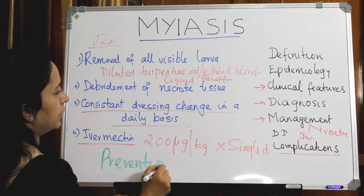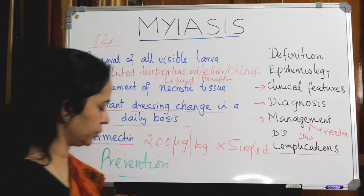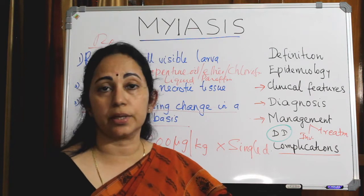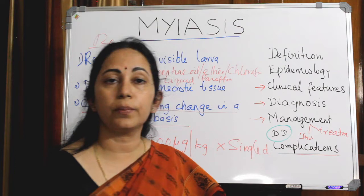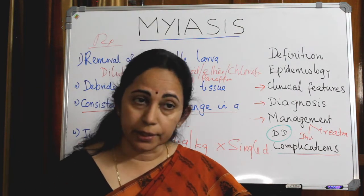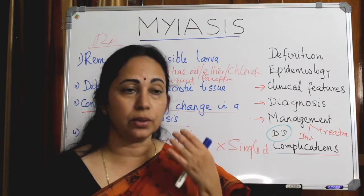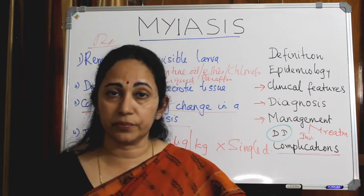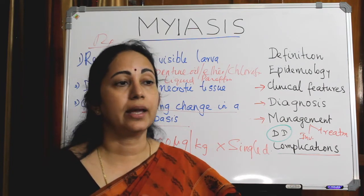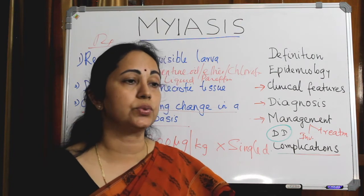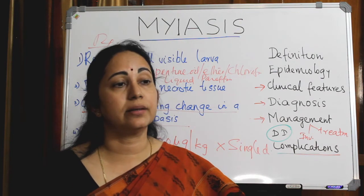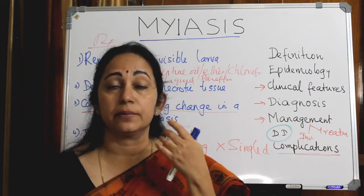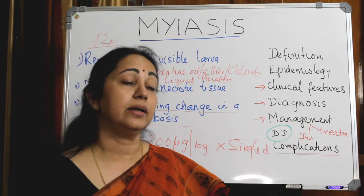Differential diagnosis includes any insect bite reaction, local cellulitis, or abscess formation. Complications arise because the larva causes extensive tissue destruction and migrates to other areas. This can cause septal perforation or palatal perforation. In the tracheostomy site, migration to deeper parts can cause stridor, dyspnea, or aspiration. The larva can also migrate to the intracranial cavity, leading to septicemia and death.